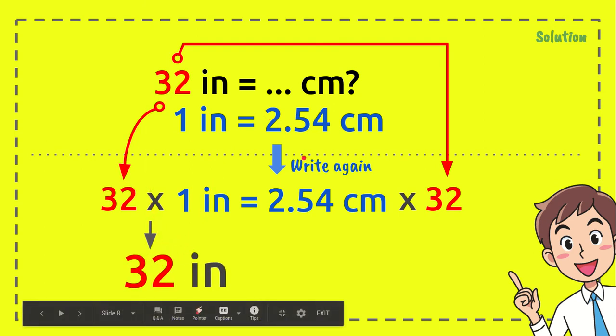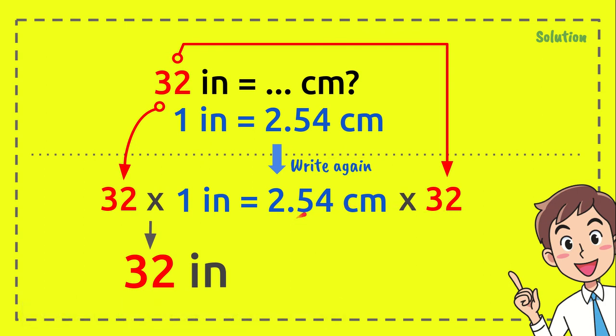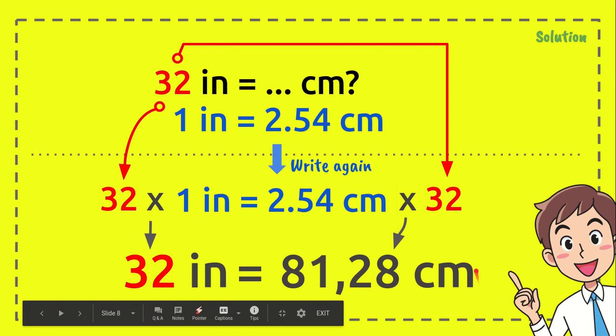And 32 times 2.54 equals—what does it equal? It equals 81.28 centimeters. This is the point, not the comma. And that's the answer.